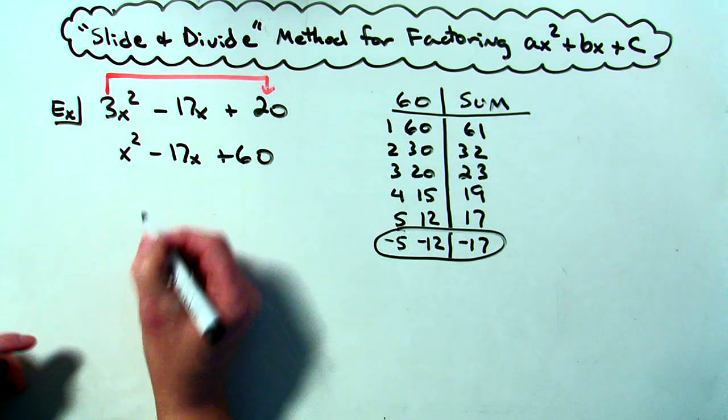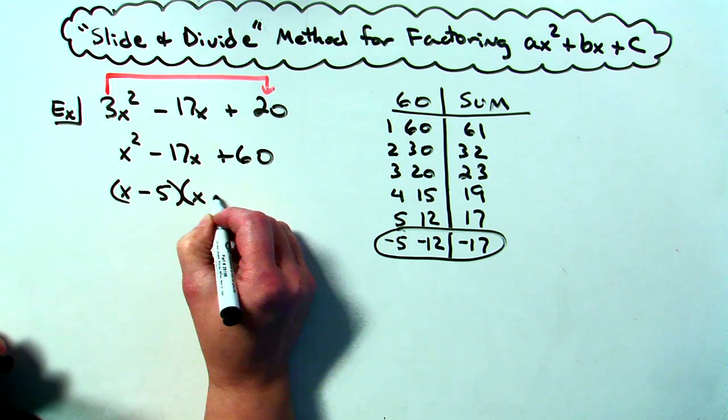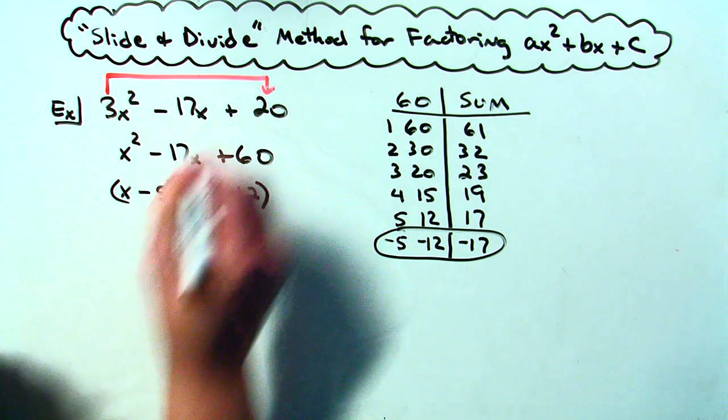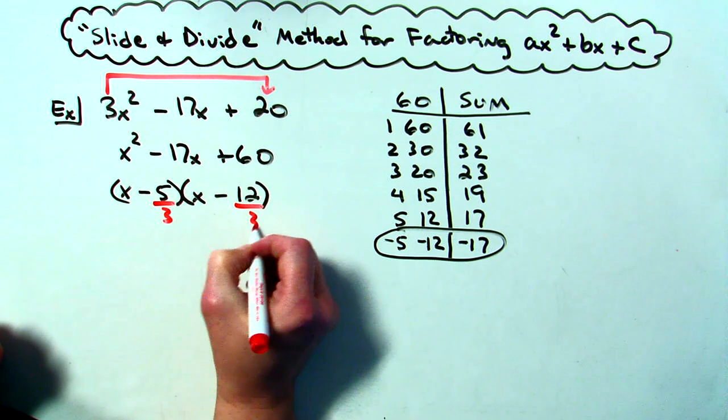So a little effort there in factoring that one. x minus 5 and then x minus 12. So we've done the slide part. Now we're ready for the divide. I've got to divide both these factors by 3.